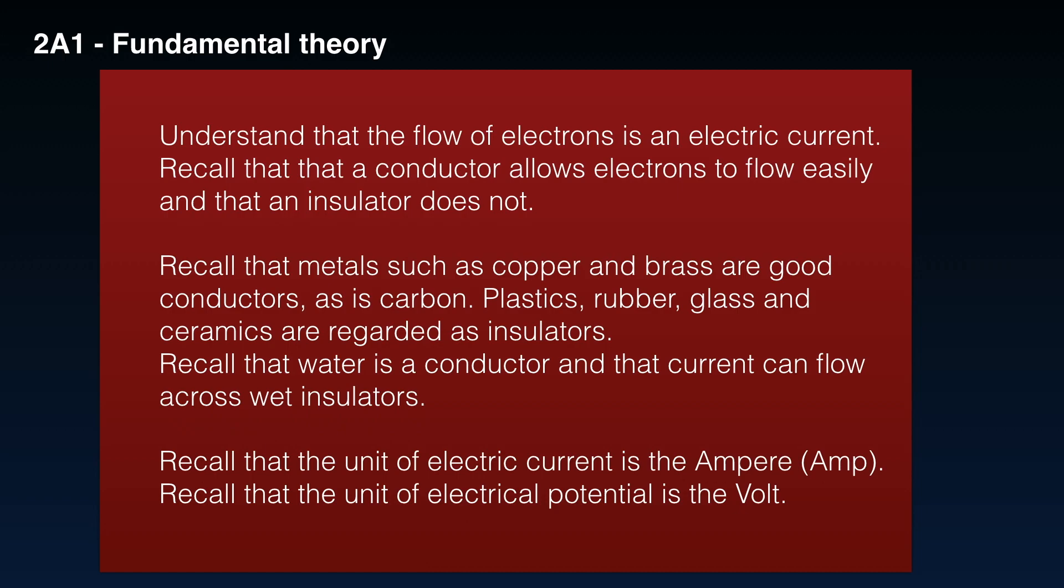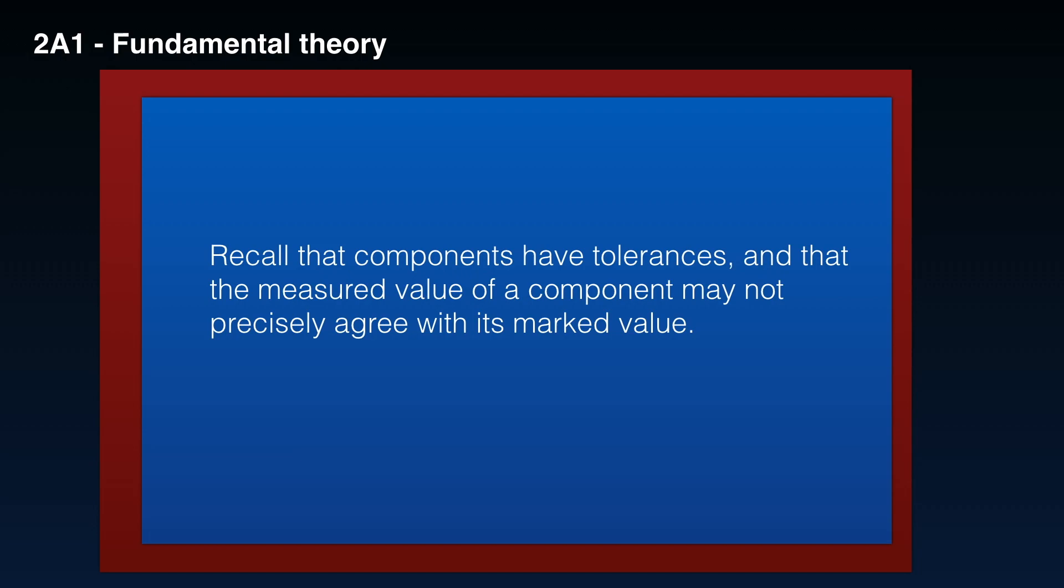By the time you get to this video, you should understand that the flow of electrons is an electric current. Recall that a conductor allows electrons to flow easily, and that an insulator does not. Recall that metals, such as copper and brass, are good conductors, as is carbon. Plastics, rubber, glass, and ceramics are regarded as insulators. Recall that water is a conductor, and that current can flow across wet insulators. Recall that the unit of current is the ampere, abbreviated to the amp, and recall that the unit of electrical potential is the volt. That's pretty much the same as the old syllabus anyway.